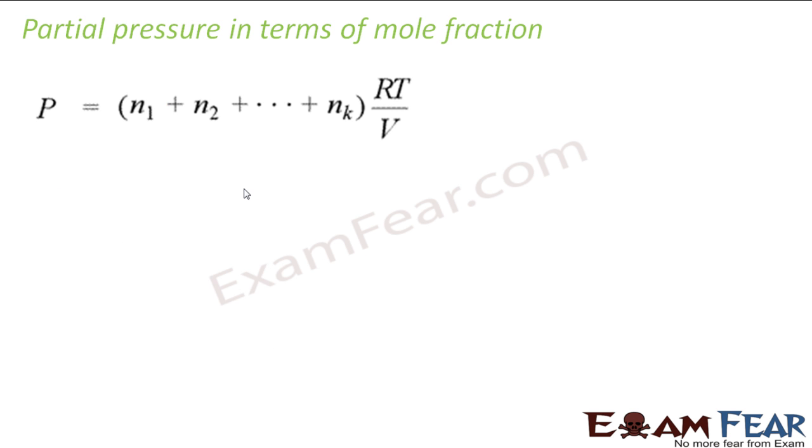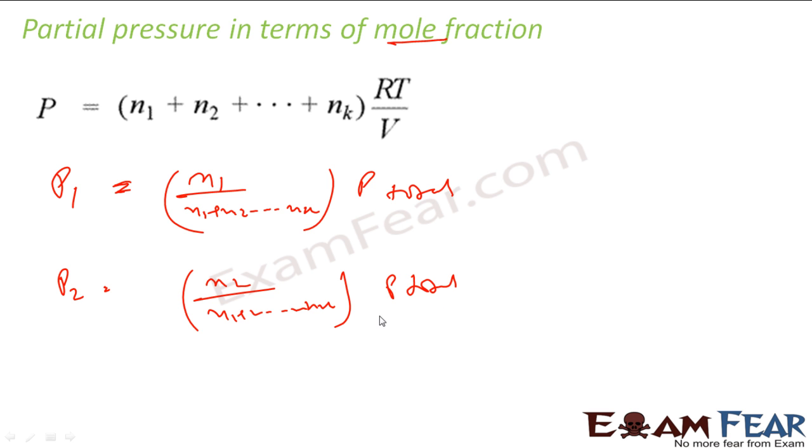This thing we have already covered where we told that total pressure in terms of mole fraction will be: you add all the moles, multiply RT by V. Also, to find pressure due to 1 mole—I mean the gas 1—will be n1 by n1 plus n2 to nK into P total. So the pressure by second gas will be n2 by n1 to nK into P total.